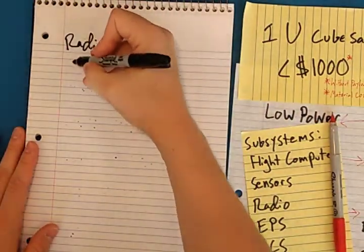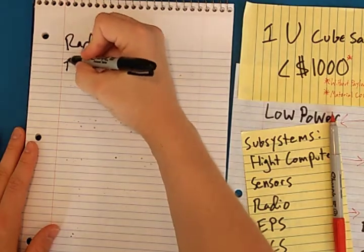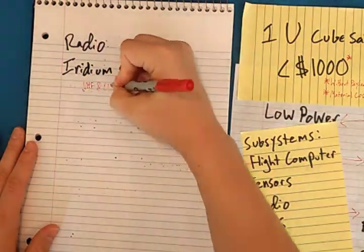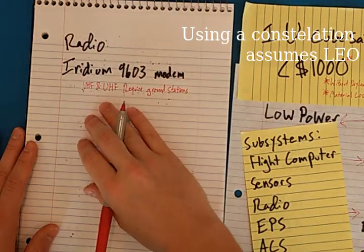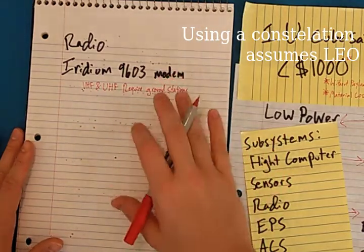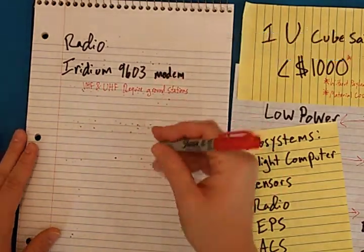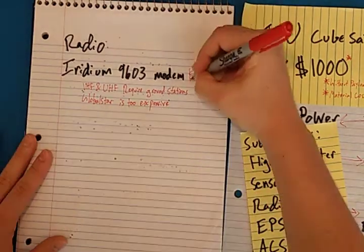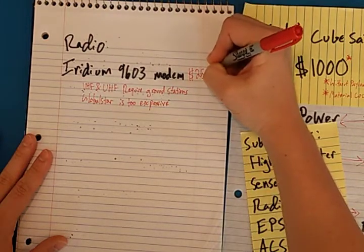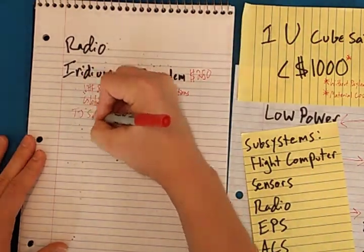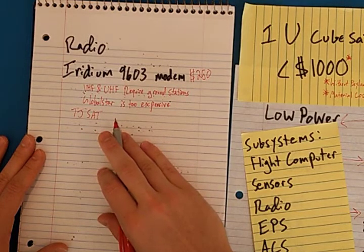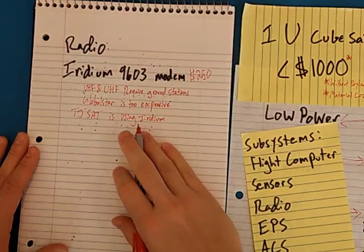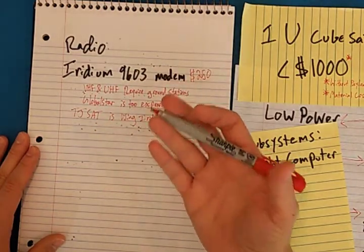Let's talk about the radios. For my mode of communication, I am picking the Iridium 9603 modem. I've decided to not use VHF and UHF. Radios require ground stations, and that's something that I don't want to get into at this point. Globalstar is just too expensive. It's another constellation that I could end up using, roughly $250. What I'm relying on is that TJSAT, which is launching as a part of the NASA-funded Ilana program, they are using Iridium to demonstrate communications, and assuming it works for them, it should be able to work for me.